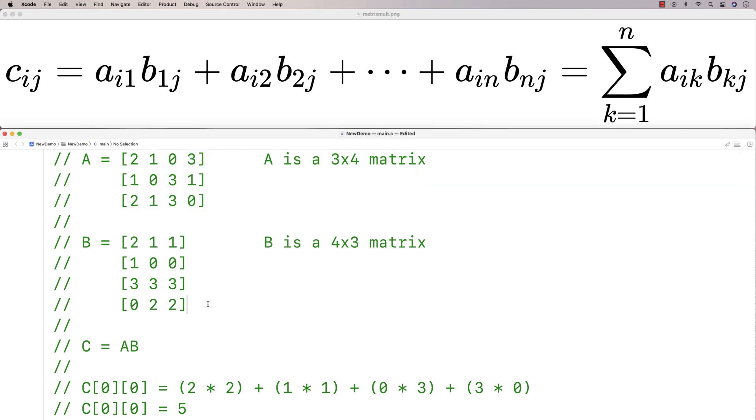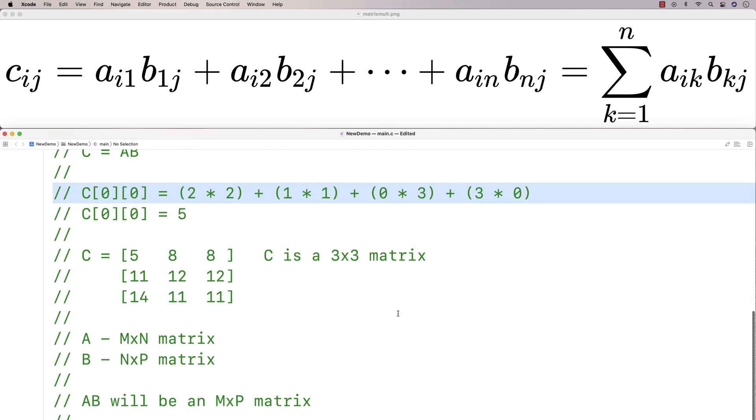Here we have a matrix A and a matrix B, and you can see how we calculate the element of matrix C at row 0 and column 0 by multiplying the corresponding elements in the first row of A and the first column of B, and then we sum them together to get 5. We follow this process to calculate the remaining elements of C.